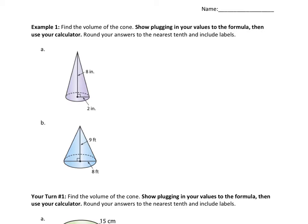This is example one for lesson 13.1. We're supposed to find the volume of a cone, showing how to plug in values to the formula and then use the calculator, rounding to the nearest tenth and including labels. When doing volume of a cone, the first thing you should do is write down the formula: V = (1/3)πr²h.